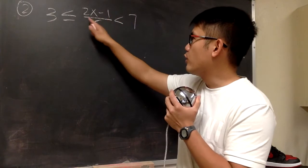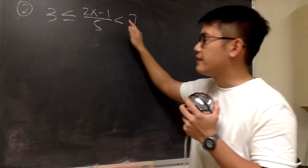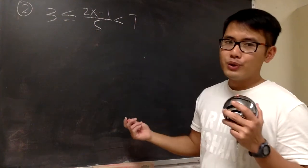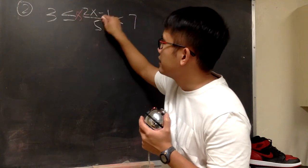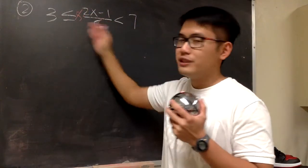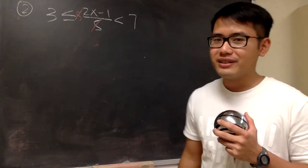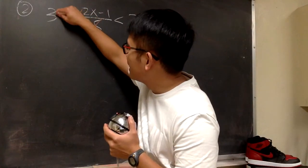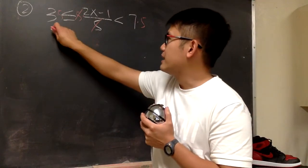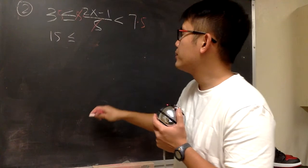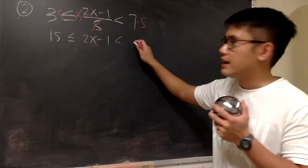For the next one, we have (2x minus 1) over 5, and it's between positive 3 and positive 7, including positive 3 but not including positive 7. We have a denominator of 5, so we multiply all three sides by 5 to cancel it. This is a compound inequality — the AND or in-between situation. We maintain less than or equal to, and the expression stays 2x minus 1, and the right side maintains as well.